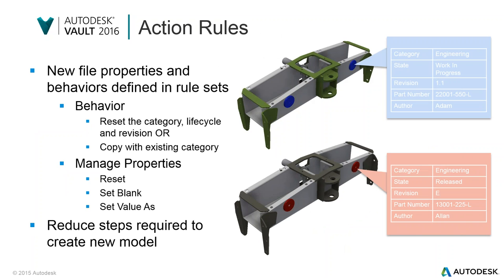The rules engine lets you define what your categories, lifecycles, and revisions are. Applying some behavior, you can then enforce some resets of properties — you can set them blank or set them to specific values. All of these things really reduce the amount of manual actions needed when creating a model, which the old copy design made you do. Now you can do these as part of the whole copy action.